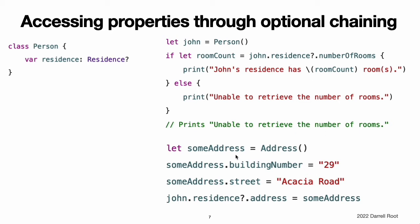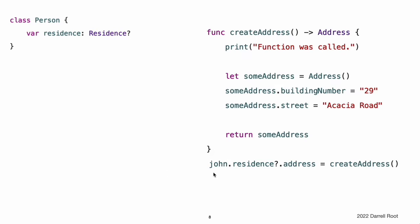We can also attempt to set a property's value through optional chaining. In this example, the attempt to set the address property of john.residence will fail because john.residence is currently nil. The assignment is part of the optional chaining, which means that none of the code on the right-hand side of the equal operator is evaluated. This listing does the same assignment, but it uses a function to create the address. The function prints "function was called" before returning a value, which lets you see whether the right-hand side of the equal operator is evaluated. You can tell that the create address function is not called because nothing is printed.